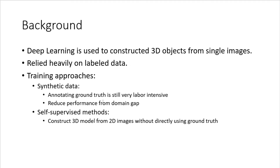Recently, people have been thinking about self-supervised methods — training the model without directly using 3D ground truth. Instead, they use secondary ground truth from other tasks such as object segmentation, detection, and classification, because those ground truths are easier to obtain and make training the 3D model much cheaper.